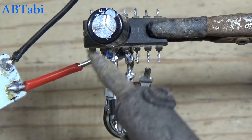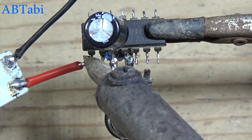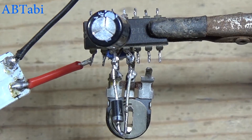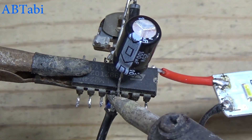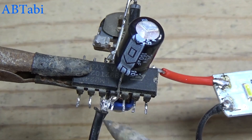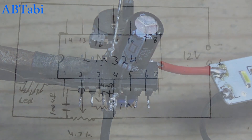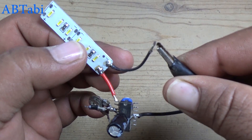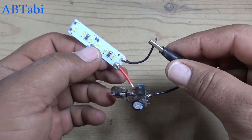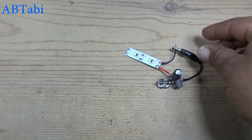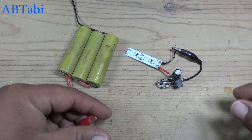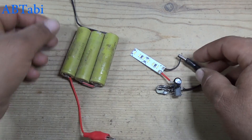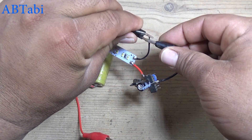We get output from IC pin 1. Here you can use a relay to control any device. Connect with IC pin 3 and the negative device; connect with IC pin to the 12 volt battery.